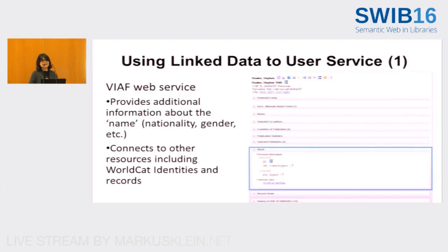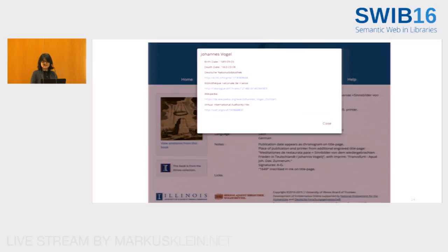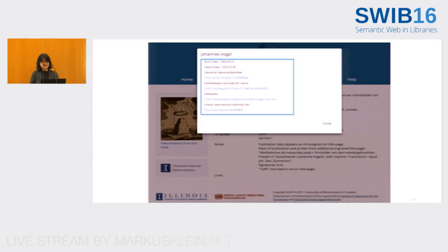This is a book-level display page in Emblematica Online. If a name appears in the SPINE metadata — usually a creator, a printer, or somebody who created those emblems — and that name has a matching VIAF link, we add a little box with 'more info.' If users want to find out more info and click that button, our system script goes out to VIAF and grabs the information and displays it to users. You can see there are links to two National Library Authority datasets as well as VIAF, WorldCat, and sometimes Wikipedia, so users don't need to go out to the web and search on their own.